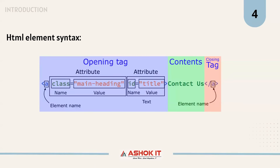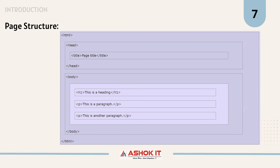Let us see what is the HTML page structure. It consists of DOCTYPE HTML, and we write the whole markup inside the HTML opening and closing tags. HTML is divided into two parts: the head section and the body section. In the head section, we write metadata, title, and links. Whatever we want to display on the web page is written inside the body tag.